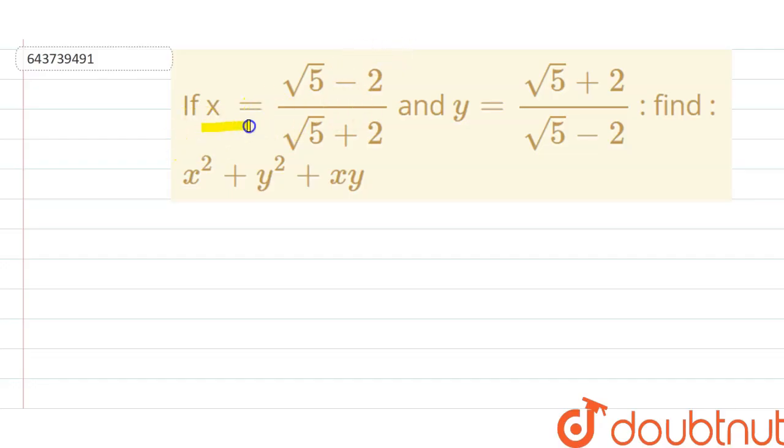x equals (√5-2)/(√5+2) and y is given, then find x² + y² + xy. So first of all, we will simplify these given expressions.